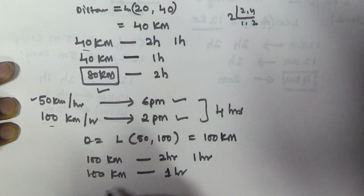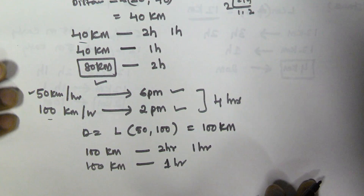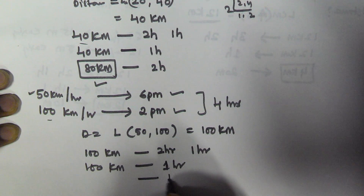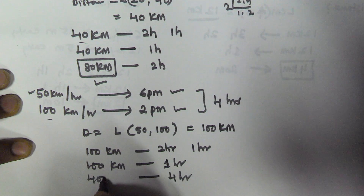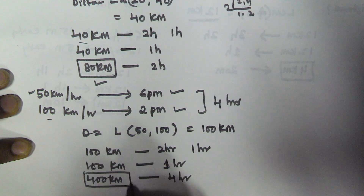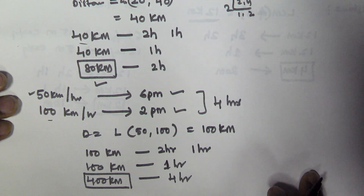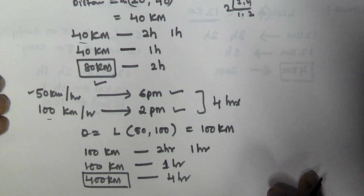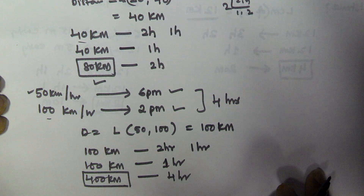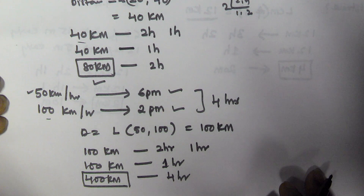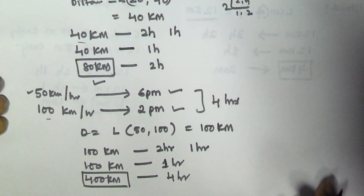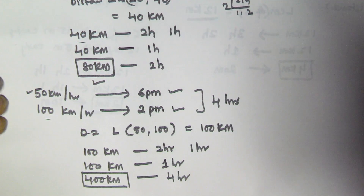If 1 hour corresponds to 100 km, then 4 hours is equivalent to 400 km. So this is the actual distance between his home and office. I hope you got this. Thank you very much for watching this video. Please subscribe to my channel.